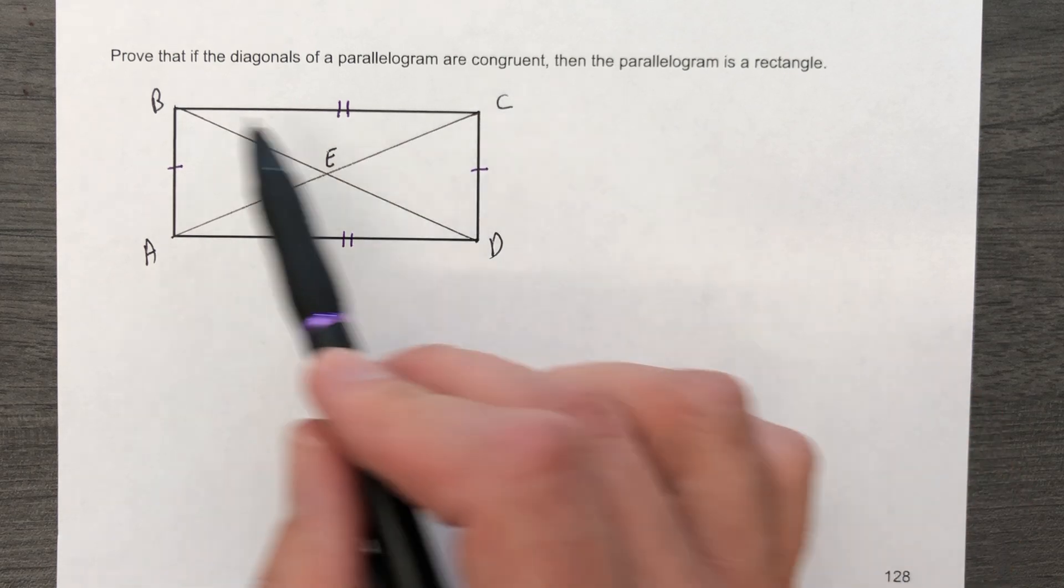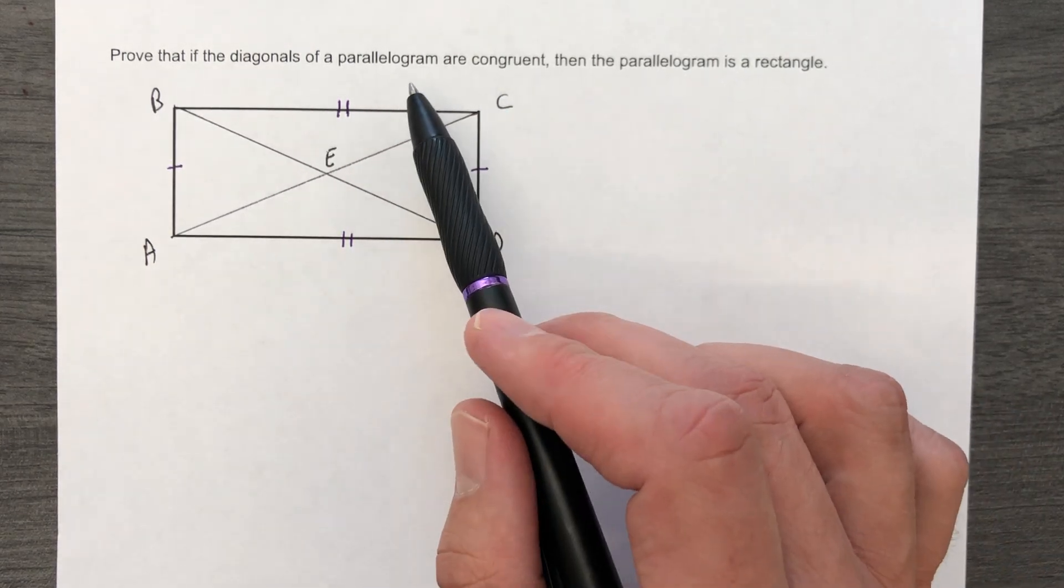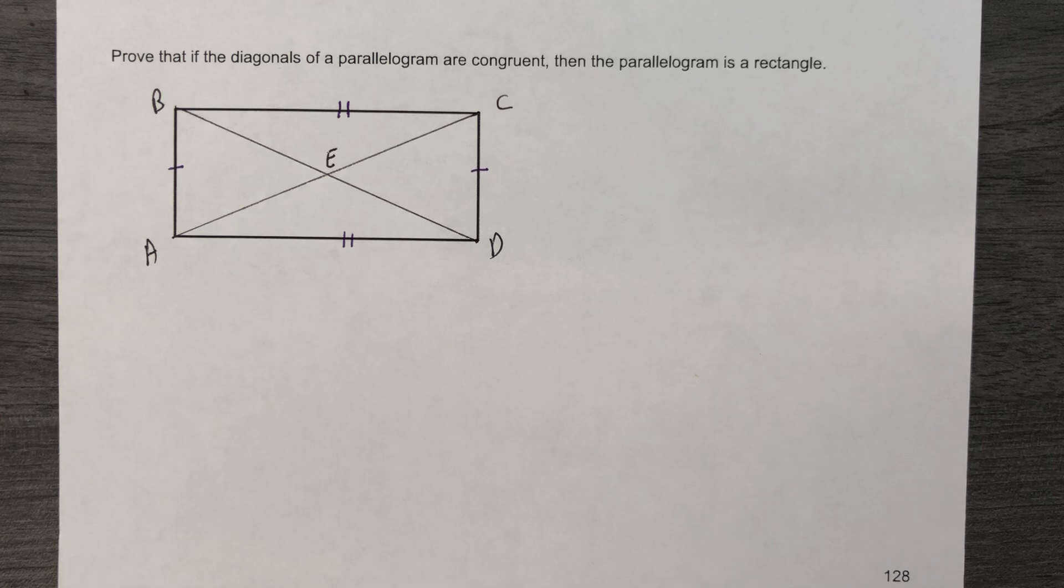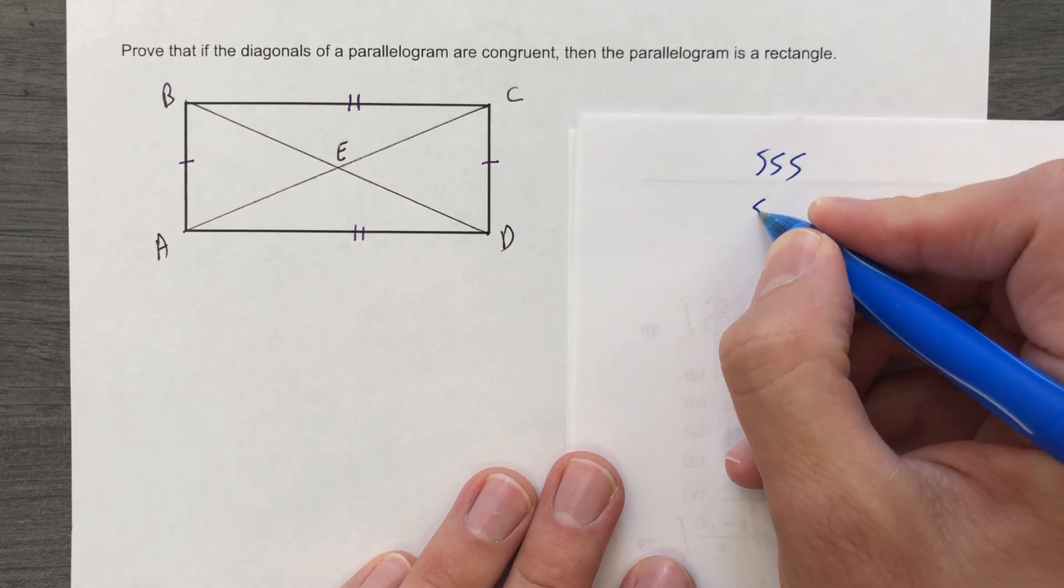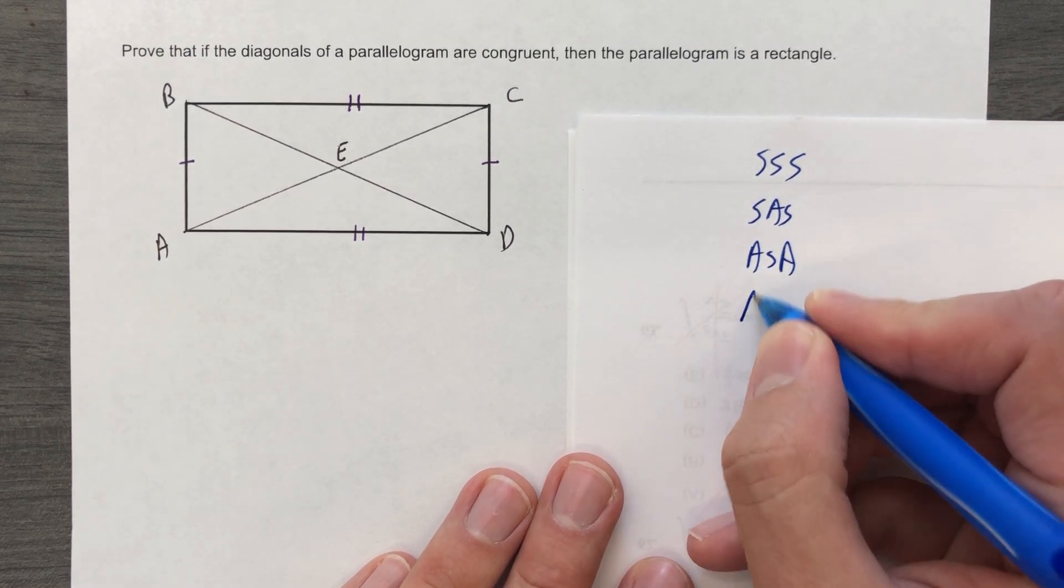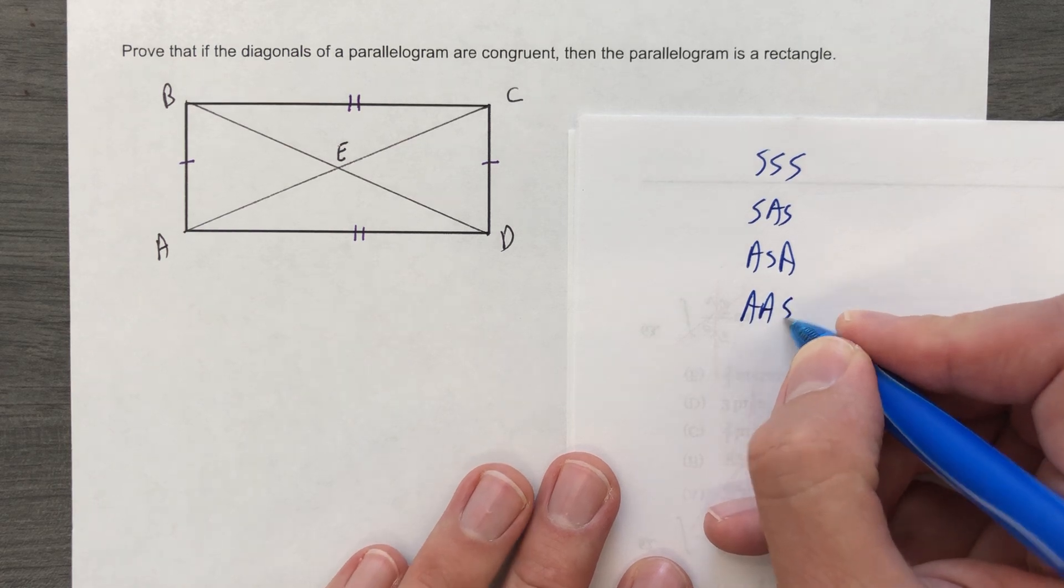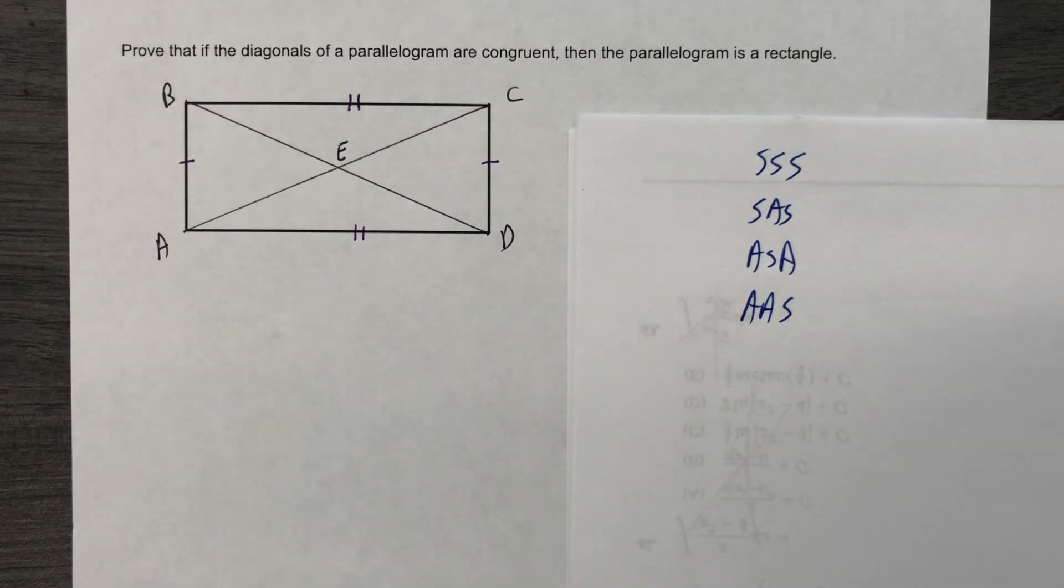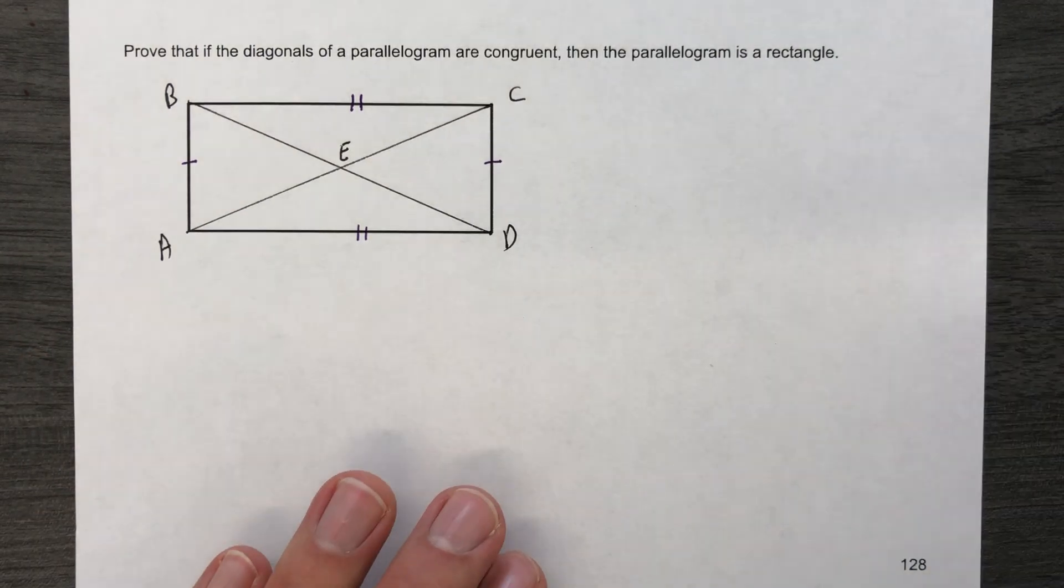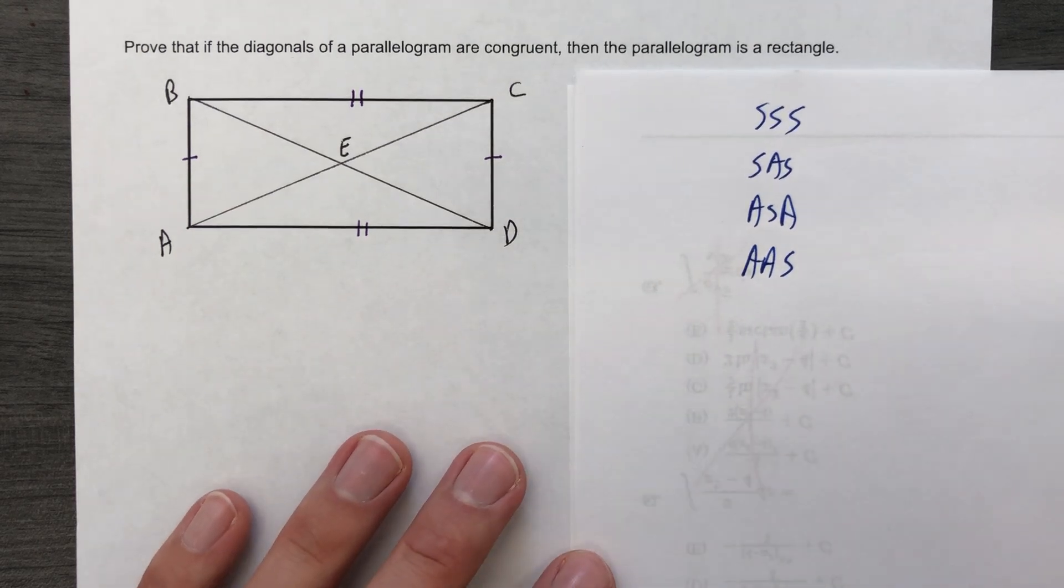When they say if this is true, they're giving us a parallelogram with diagonals that are congruent, and now we're gonna have to go and prove it. We have consistently for the past couple proofs been using one of the ways of finding triangles congruent. Here's that list again: SSS, SAS, angle side angle. I would say hypotenuse leg, but we don't know for sure that these are right angles yet.